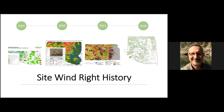Very early on, we attempted an approach specific to one species. There's an iconic species found here in the Great Plains called the lesser prairie chicken — a prairie grouse species that's been on the decline for decades. At the time, there was talk about enacting regulatory approaches to conserving the habitat and the species under the federal government's Endangered Species Act. There was a tremendous amount of pushback.